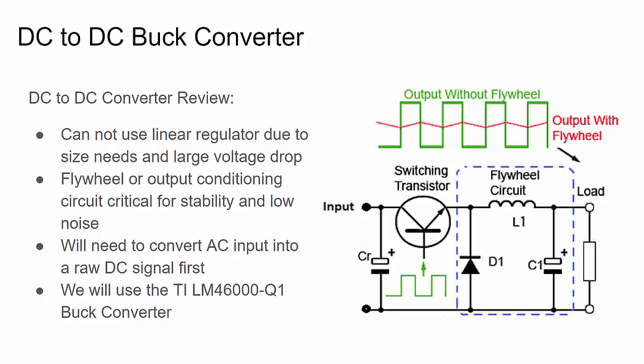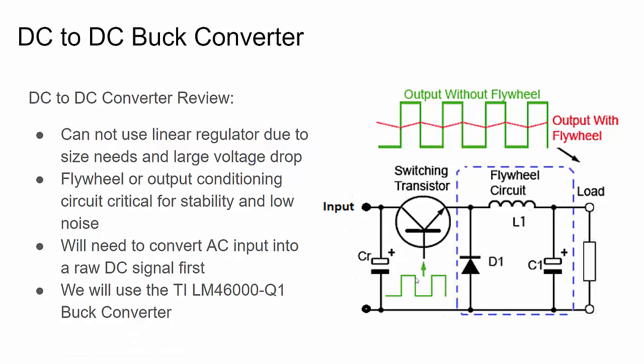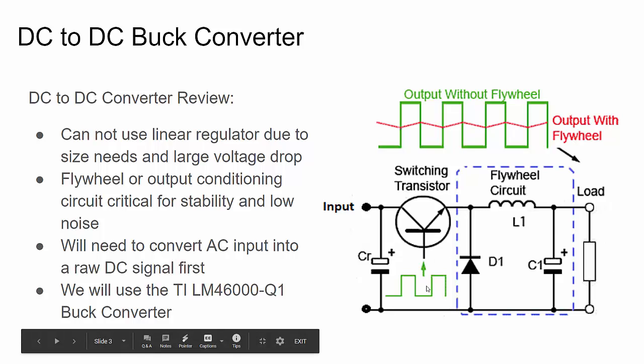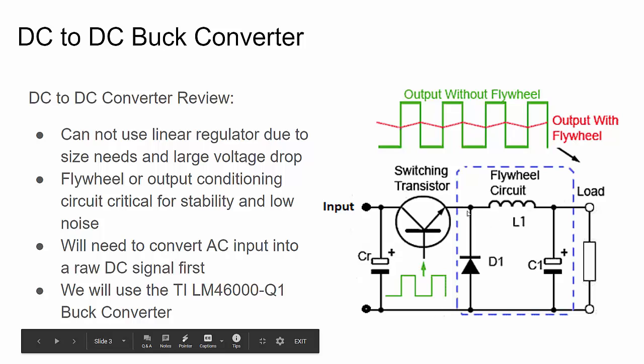I'm assuming the listener has a basic understanding of a DC to DC converter, especially a DC to DC buck converter. If not, I'd encourage you to search the internet to get the basics. A DC to DC converter, unlike a linear regulator, takes a DC input, chops it up into a pulse-width modulated signal, and smooths that signal into a DC level. The duty cycle of the PWM signal changes based on the load's response to maintain a constant voltage.